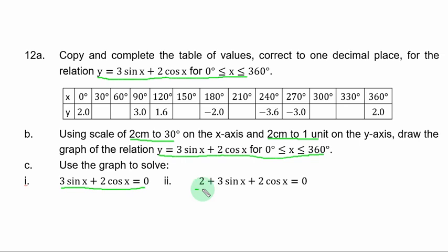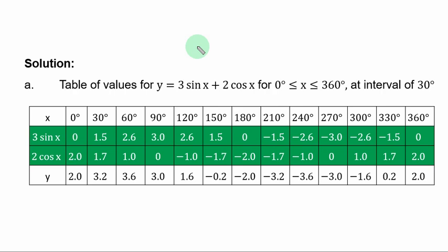Remember if you got 2, 2 plus 3 sin s plus 2 cos s equal to 0. So let us take the solution to this question. Solution part a, table of values for y equal to 3 sin s plus 2 cos s for the range of values of s at interval of 30 degrees. To get y values, we need to do 2 things. Look for 3 sin s and 2 cos s.